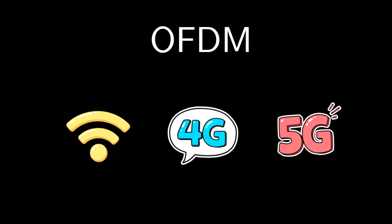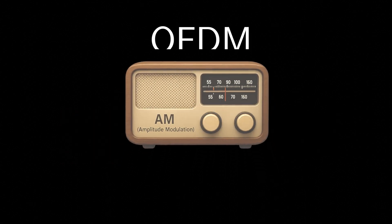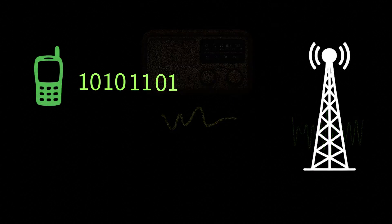OFDM is kind of an extension of amplitude modulation, AM used in olden radios. In AM, the analog message is multiplied by a cos wave and transmitted over the air. But today's communication is digital, meaning our messages are made up of bits, zeros and ones.